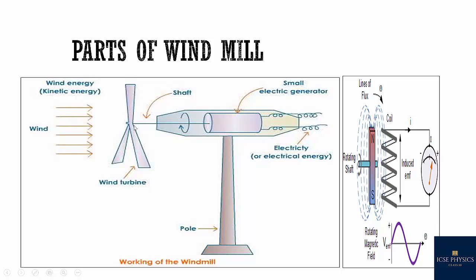So when wind blows, it makes the turbine move and this wind energy is transferred into rotational energy. And then this rotational energy is taken by the small electric generator to produce electricity.